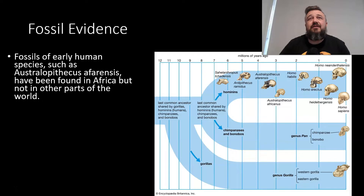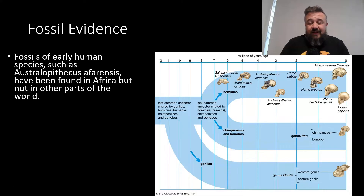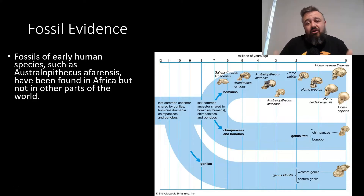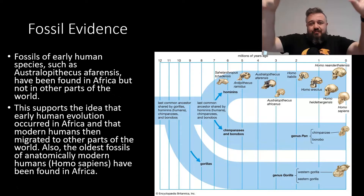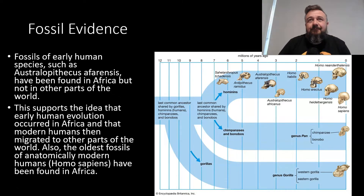Fossils of early human species such as Australopithecus afarensis have been found in Africa but not further out than that. Our earliest ancestors are found only in Africa, which means that's probably where we started. This supports the idea that modern humans started in Africa and then moved out from there. We also see that the earliest fossils of Homo sapiens — that's us — are found in Africa.